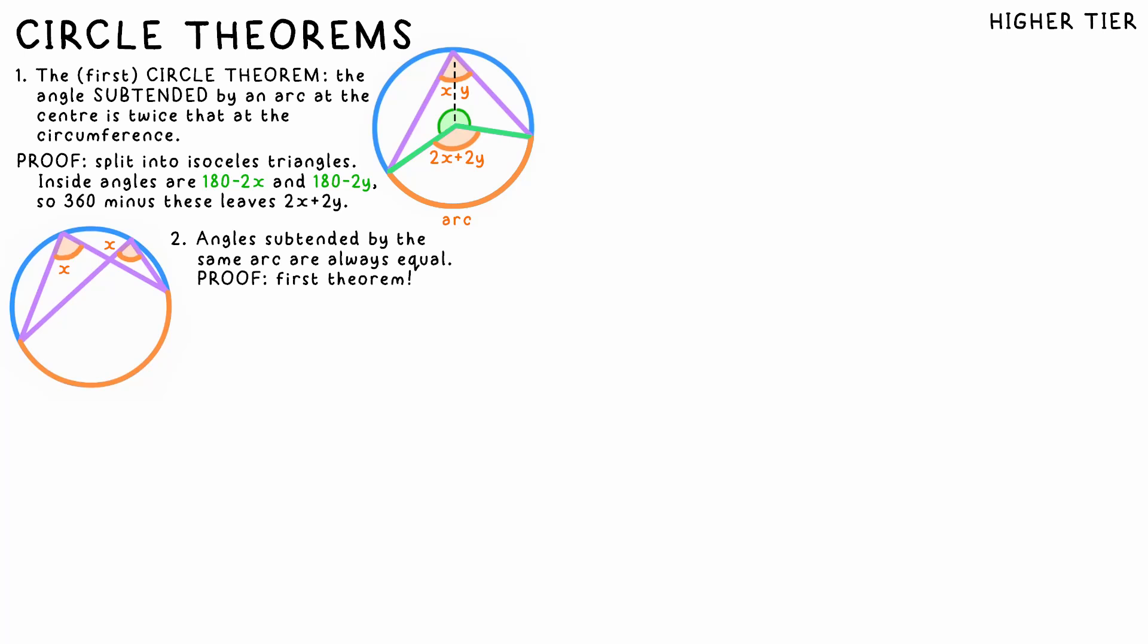Next, the angles subtended by the same arc must be equal. This follows on from the first theorem. If we join the common points to the center, we know that the angle subtended there must be double that at the line, no matter where the far point of the segment is.